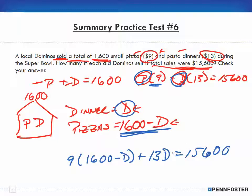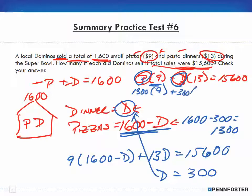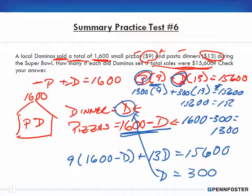And we end up with D being 300 — so 300 dinners. And we had 1600 minus 300 for the pizzas, meaning we had 1300 pizzas. To prove it, we replace pizzas with 1300 times $9, add it to dinners of 300 times $13, and that should equal $15,600. When you do the math, it ends up being $15,600 equals $15,600. Confirmed.